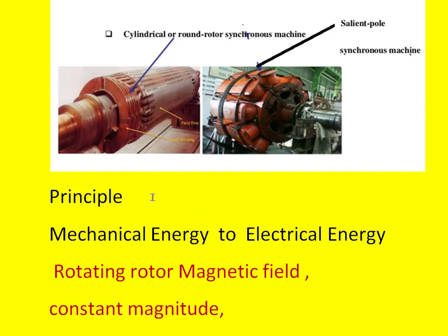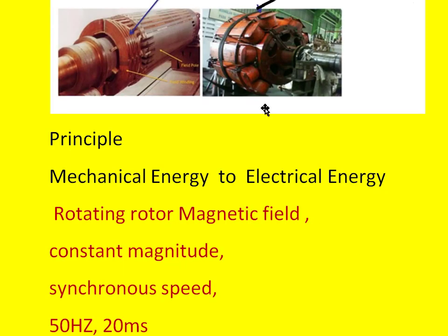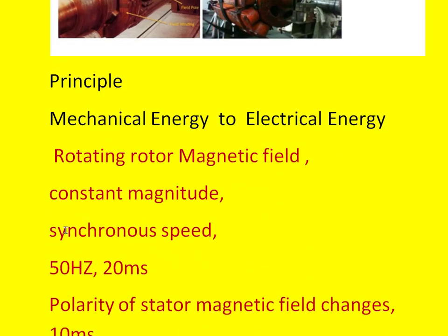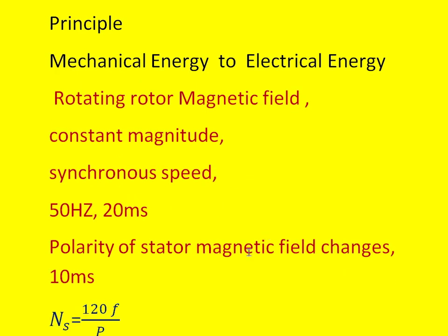Coming to the principle of the synchronous generator — in general, the definition of a generator is that it is a machine that converts mechanical energy into electrical energy. Some key terms here are: rotating rotor, magnetic field with constant magnitude, running at synchronous speed. The synchronous speed can be obtained using the formula 120f divided by P, where f is the frequency and P is the number of poles on the rotor.